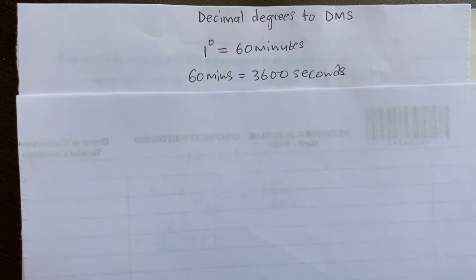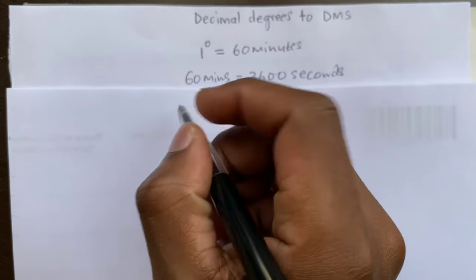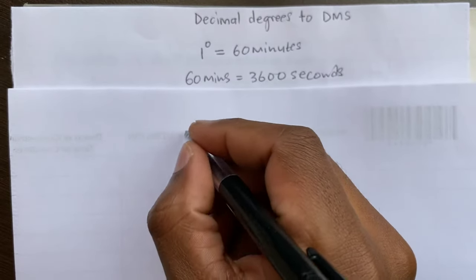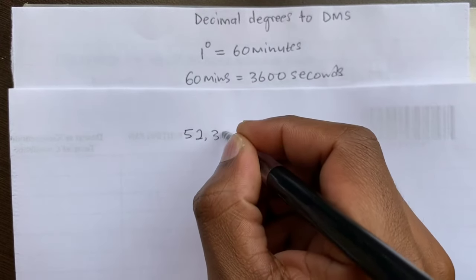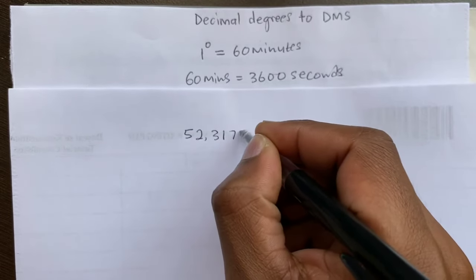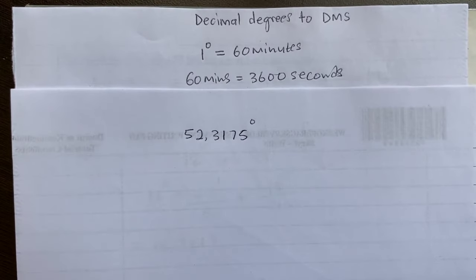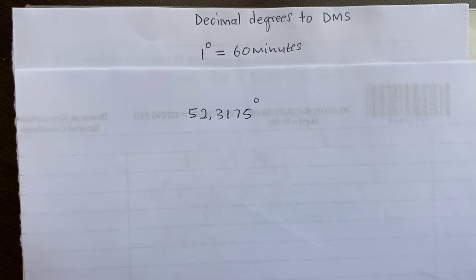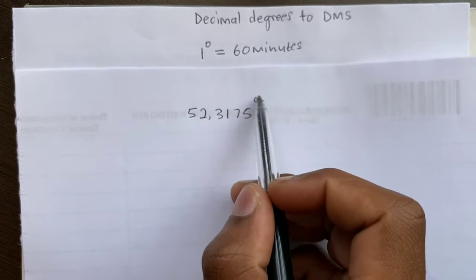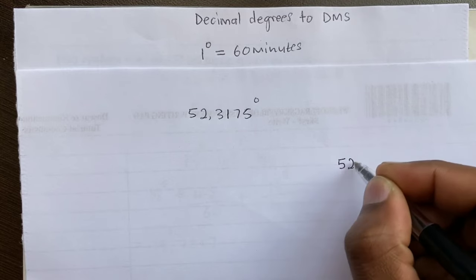Now, how do we convert from decimal degrees to DMS? Say you're given 52.3175 degrees and you're asked to convert to degrees, minutes, and seconds. To solve this, you write 52 as your degrees, so this will be 52 degrees.